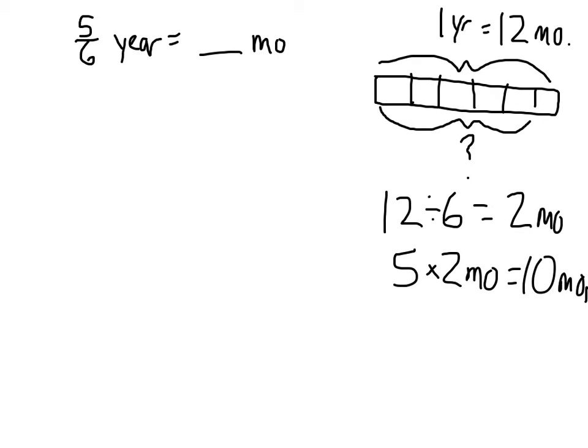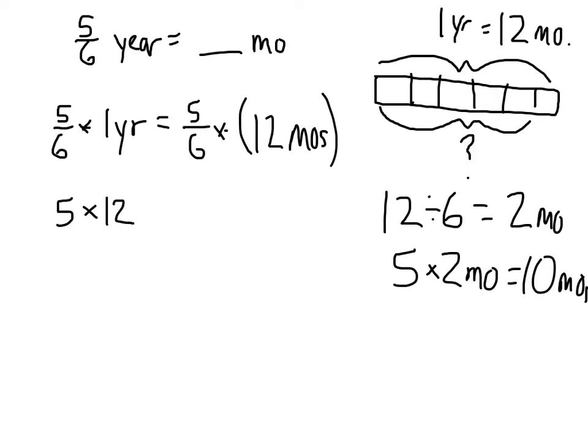The other way to look at this is I have 5 sixths times 1 year. I have 5 sixths group of a year. That's the same as 5 sixths groups of 12 months because 12 months is the same as a year. Now I have 12 groups of 5 sixths.